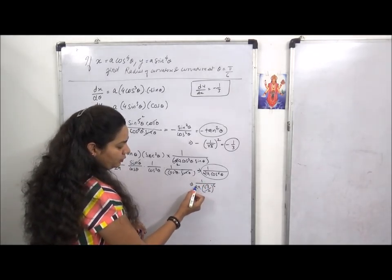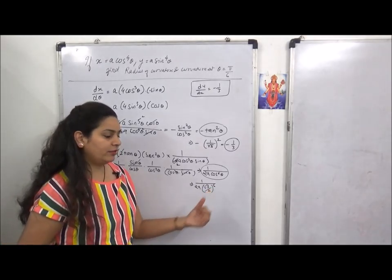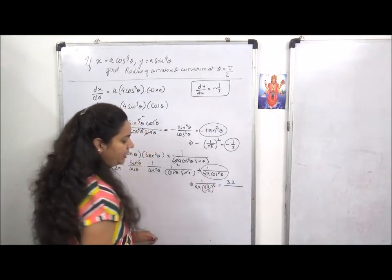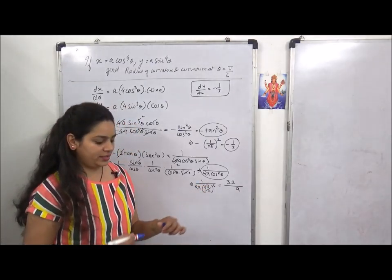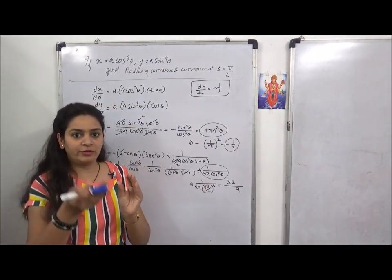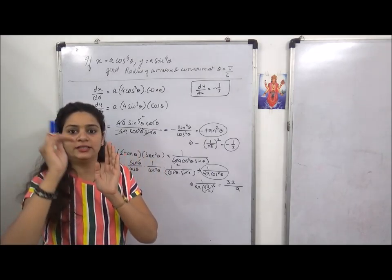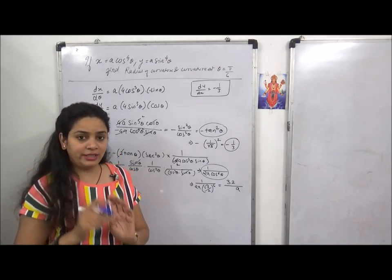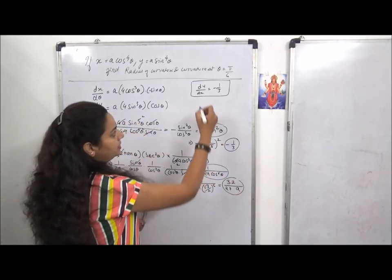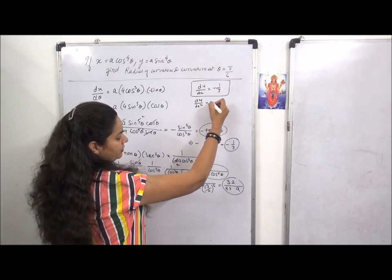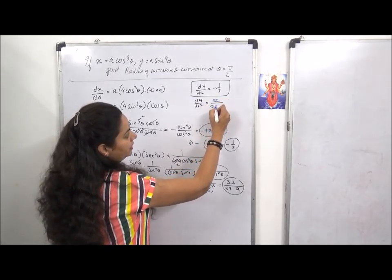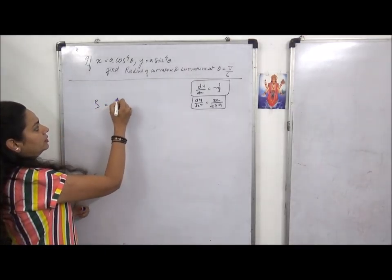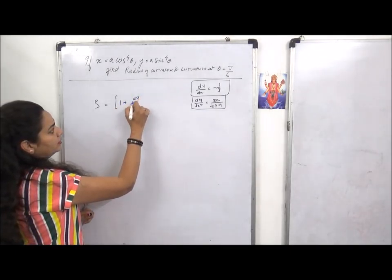One sin cancels with another sin. Cos square, cos cube - combining these gives cos to power 6 theta. Again substitute theta as pi by 6. So 1 upon 2a times root 3 by 2 raised to power 6. Cos 30 is root 3 by 2. One 2 cancels leaving 2 to power 5 which is 32. Root 3 to power 6 is 3 to power 1 by 2 to power 6, which is 3 cubed, equals 27. This becomes the answer for d square y by dx square, which is 32 upon 27a.